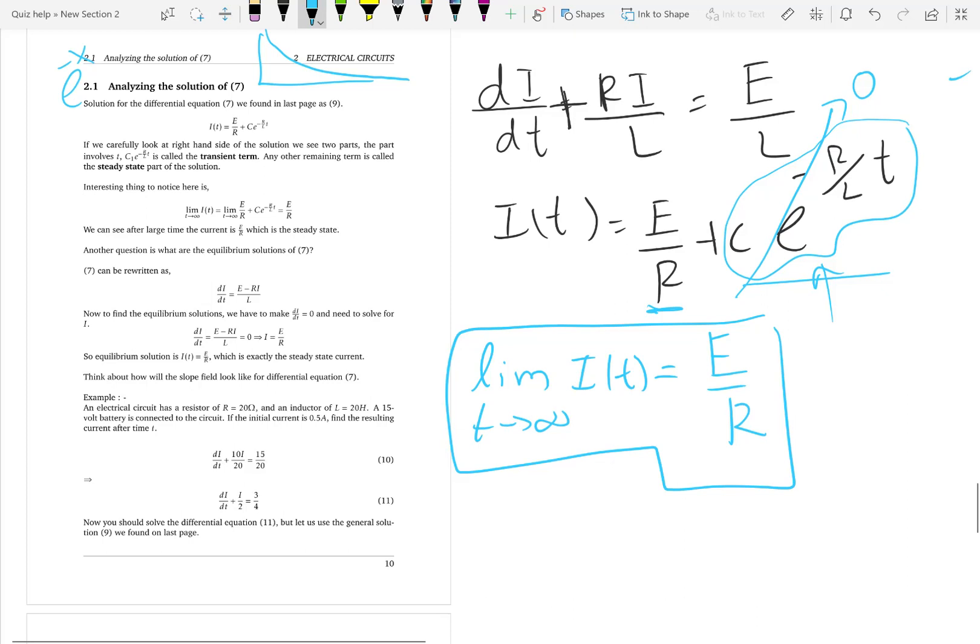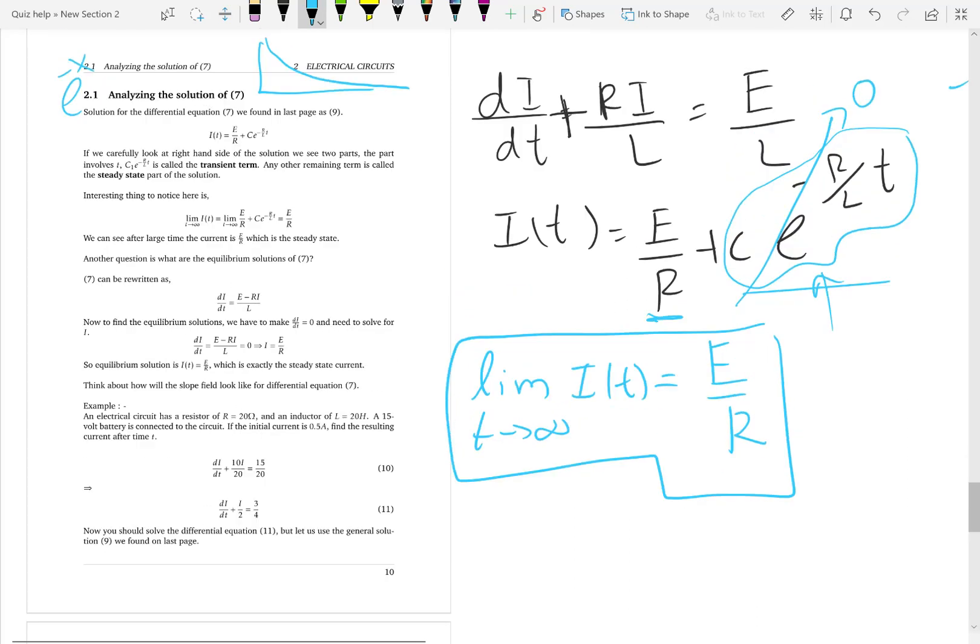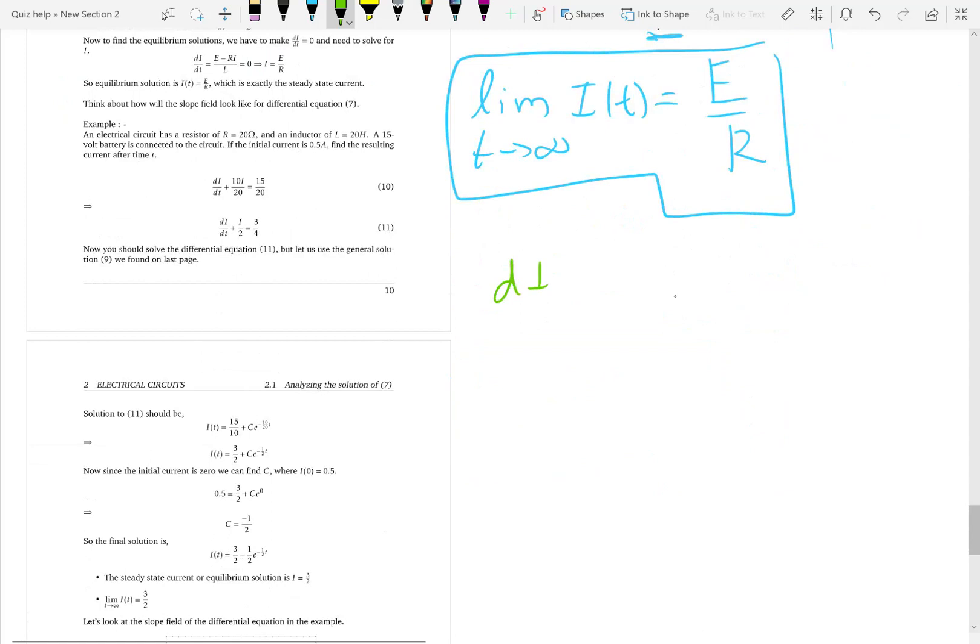Now let us go to the differential equation and find the equilibrium solution. To find the equilibrium solutions, we take the differential equation dI/dt plus rI/L equals e/L. So, let us rewrite by taking this term to the right hand side: e/L minus rI/L.